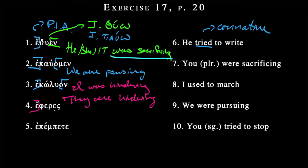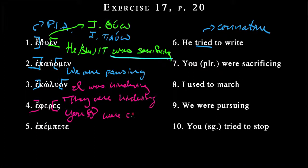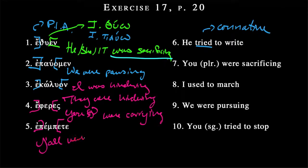Eferes, from 'phero,' to carry. The sigma is a pretty good giveaway that we're in second person singular. So: 'you singular were carrying.' And then here, epempete — again, augment, 'ete' is second person plural, from 'pempo,' meaning 'send.' So: 'y'all were sending,' or of course 'used to send,' 'tried to send,' etc. Good — so we're done with the Greek to English.